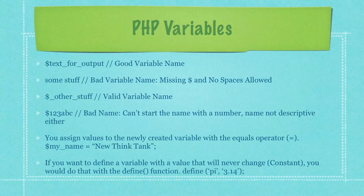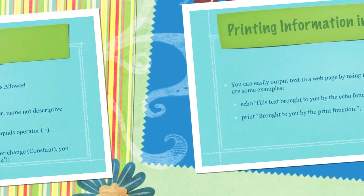Here are some examples of different variable names. First off, you have text_for_output — definitely a viable variable name. Then you have 'some stuff' — first off, there's no dollar sign at the beginning and there's also a space. Spaces are not allowed. You have another valid variable name. Here we have a bad variable name because you cannot start a variable with a number, and also this is bad just on its own because it's not descriptive. You can assign values to a newly created variable with the equals operator, and if you want to define a variable with a value that will never change — a constant — you would do that with the define function, as shown here where we are defining the value of pi.